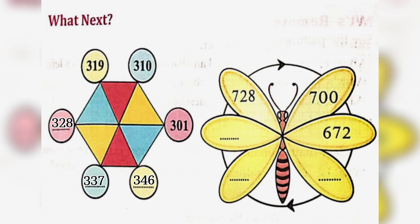In the second figure, the difference is 28. So, the numbers will be 672, 700, 728, 756, 784, 812.